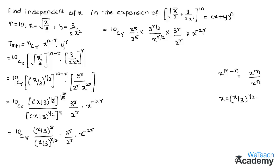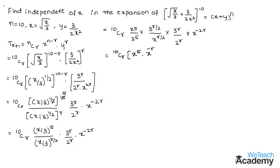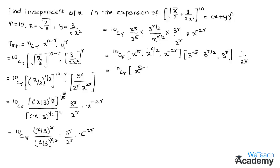Now let us group the x terms and the constant (3) terms. Grouping gives 10Cr · x^5 · x^(−r/2) · x^(−2r), and for the constant terms: 3^(−5) · 3^(r/2) · 3^r · (1/2^r). Since the bases are equal, adding the powers gives 10Cr · x^(5 − r/2 − 2r) · 3^(−5 + r/2 + r) · (1/2^r).